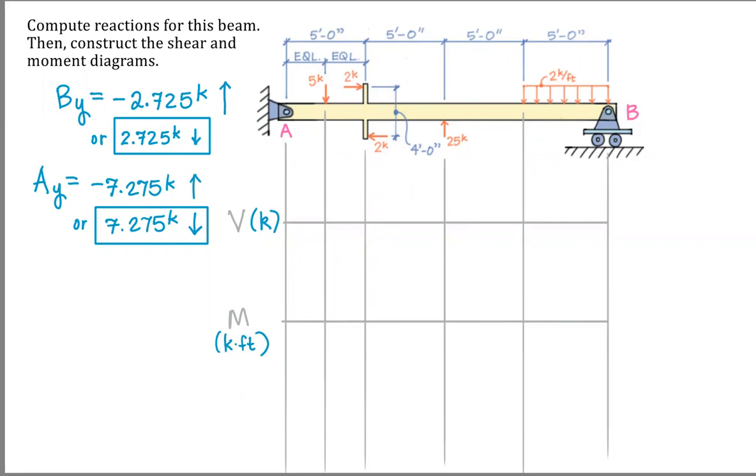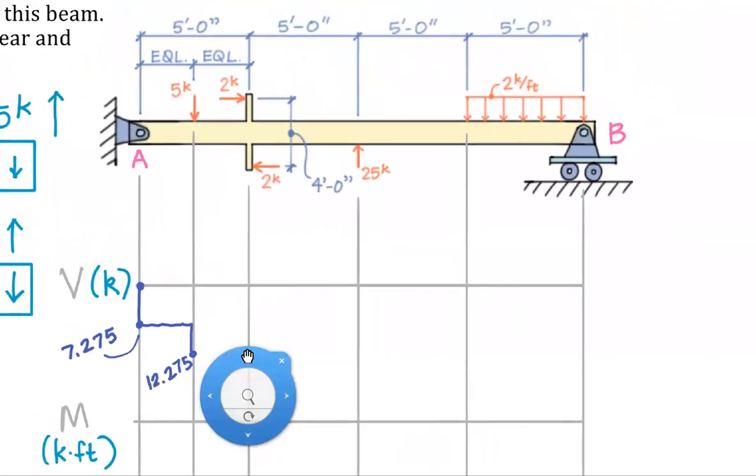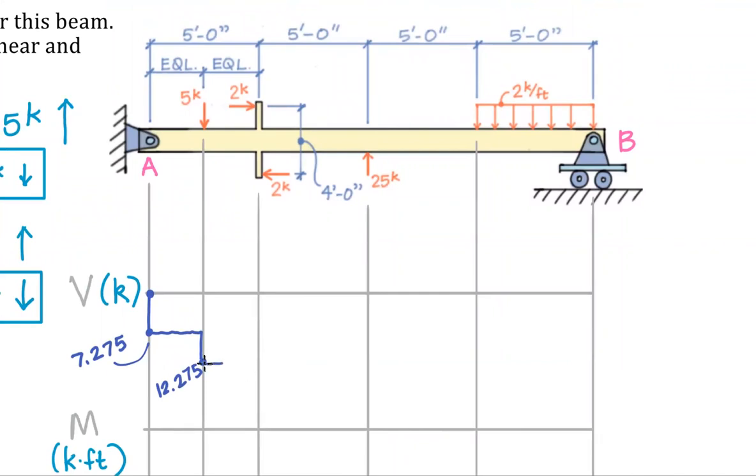So let's start over at A, and of course we always start our shear diagram out at zero, zero. The first force we come to, as we move from left to right, is the reaction itself. So we're going to jump down 7.275. Over the next little distance, we have a constant function, and then we'll jump down another five kips. It's going to put us here. That adds up to 12.275. I think I'm going to zoom in just a little bit so you can see this better as I work. Now for the next two and a half feet, we also plateau. So constant shear function. Internal shear is not changing. We blow past our internal moment. That's not going to affect our shear at all.